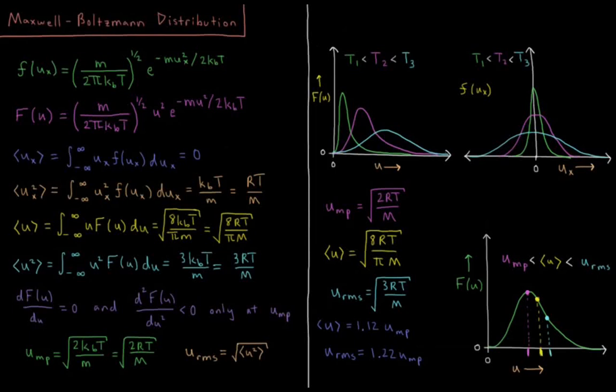This video will discuss the Maxwell-Boltzmann distribution for the distribution of the speeds of molecules in an ideal gas. This distribution was first derived by Maxwell and then later confirmed experimentally decades later.